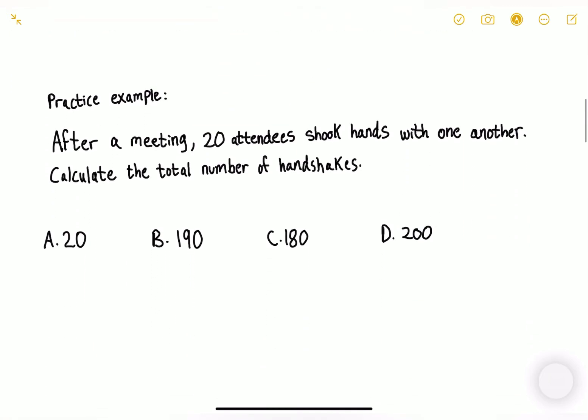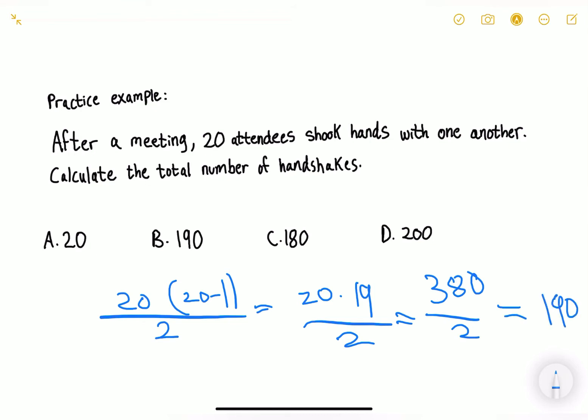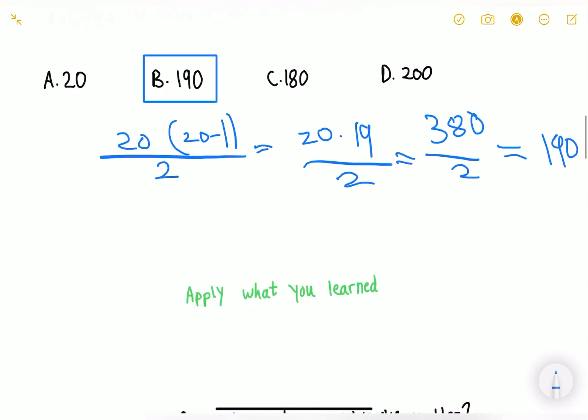After a meeting, 20 attendees shook hands with one another. Calculate the total number of handshakes. We have 20 attendees, so we put 20 times 20 minus 1 in parentheses, divided by 2. That's 20 times 19 divided by 2, which equals 380 divided by 2, which is 190. Our answer is B, 190 handshakes.